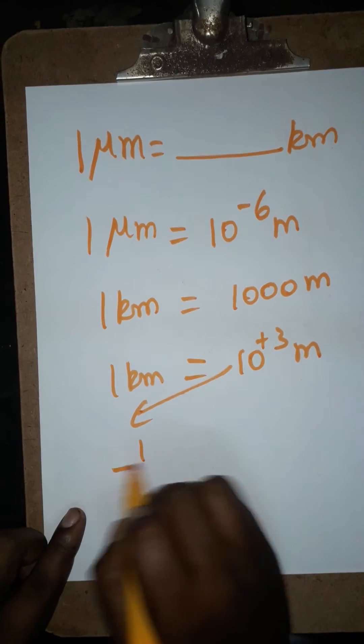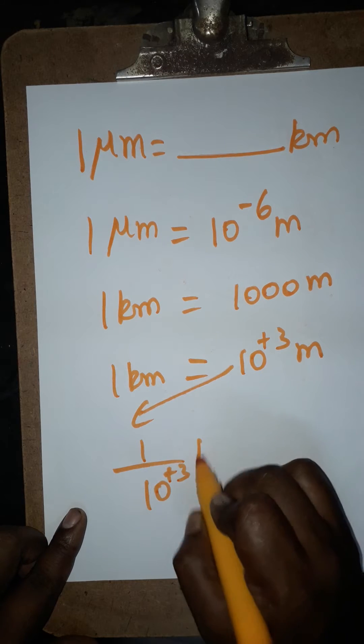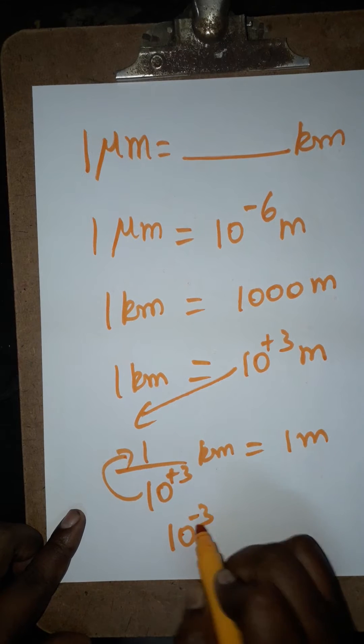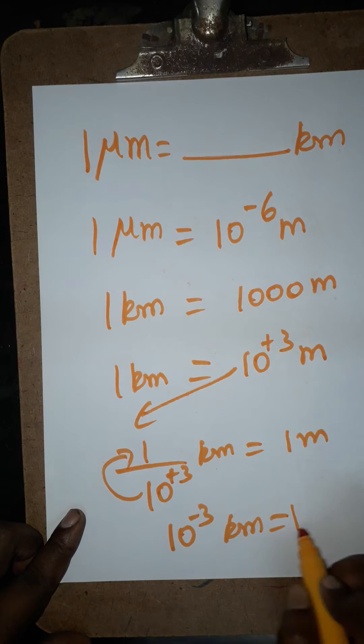I can bring this as a denominator. 1 divided by 10 power plus 3 kilometers equals 1 meter. From the denominator, when taken to numerator, 10 power minus 3 kilometers equals 1 meter.